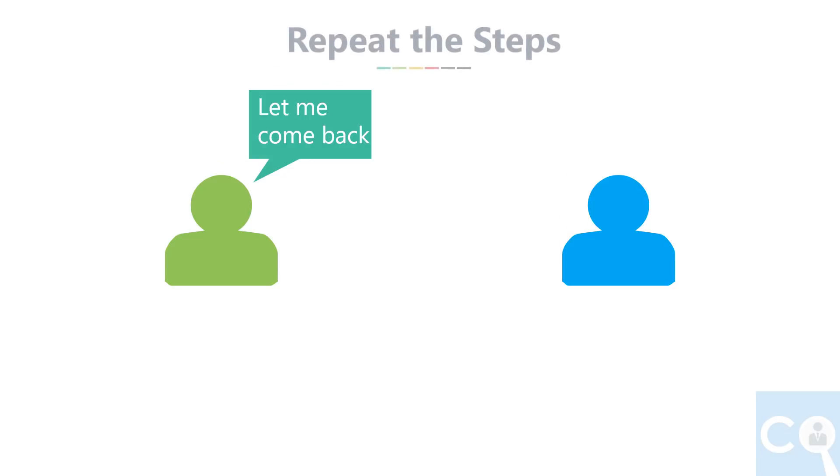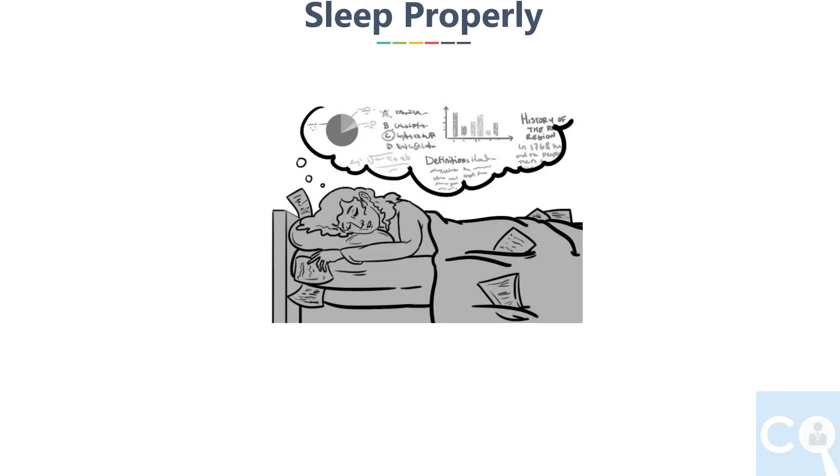So final step is, repeat the steps again for these weak points. The last tip I wanted to give is, sleep properly. While you sleep, the information you stored in short-term memory will get processed and get stored in long-term memory. This tip is general, not particularly from Feynman technique.